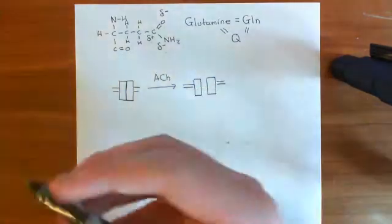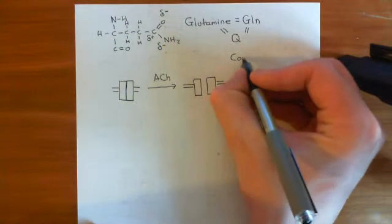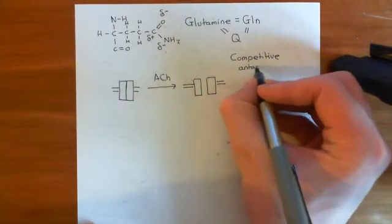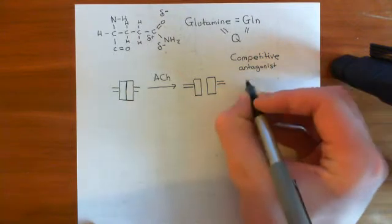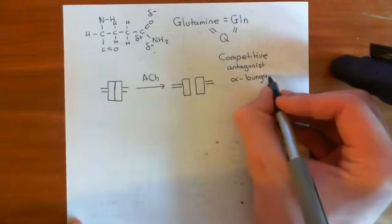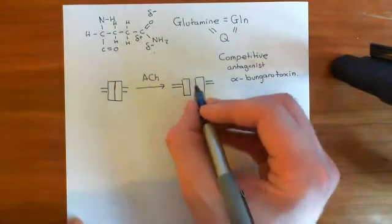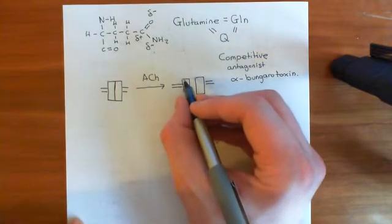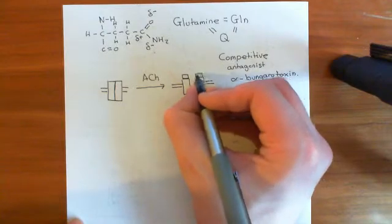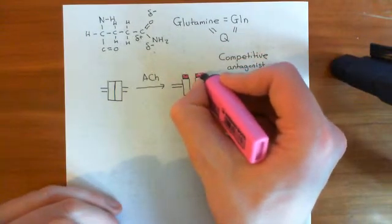We've discussed in previous videos drugs known as competitive antagonists. A famous example was alpha-bungarotoxin - a competitive antagonist of the skeletal muscle type of the nicotinic acetylcholine receptor. What this did was it bound to the same site on the extracellular domain as acetylcholine. We know two acetylcholines bind to the skeletal muscle form of the nicotinic acetylcholine receptor.